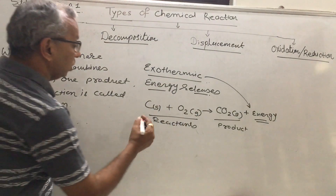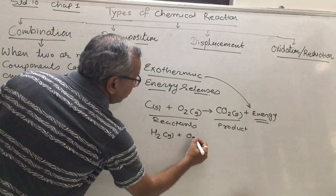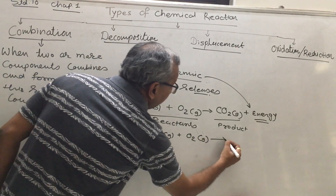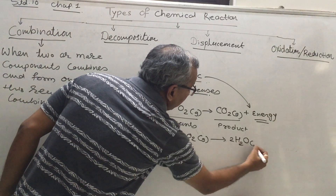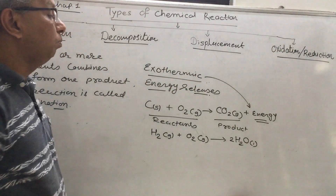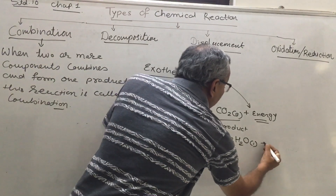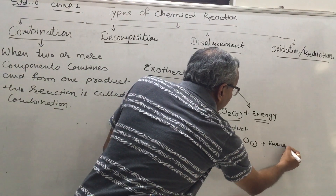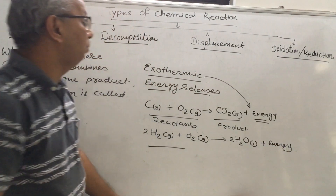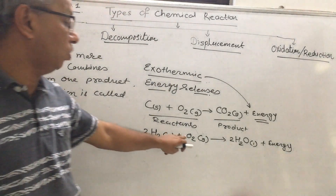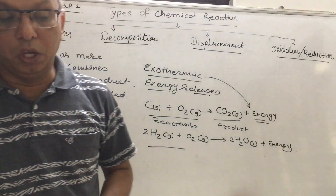Another example: hydrogen gas reacts with oxygen gas and produces water H2O, which is liquid at room temperature. Energy is released in this reaction as well, so this is also a combination reaction — hydrogen gas and oxygen gas combine to produce a water molecule.